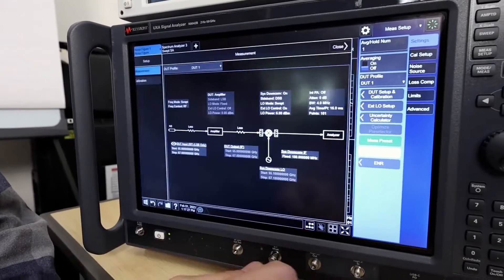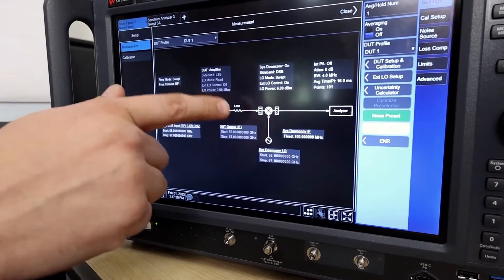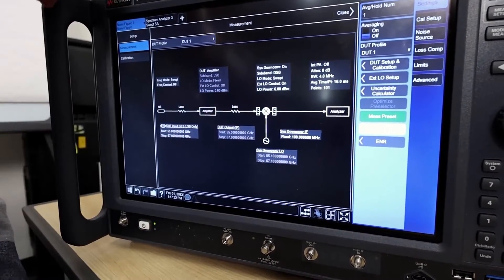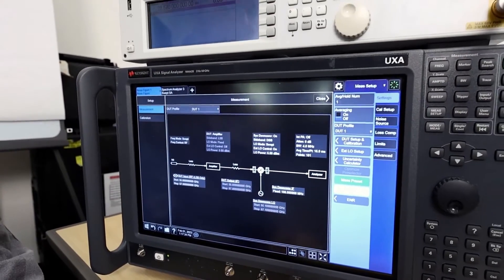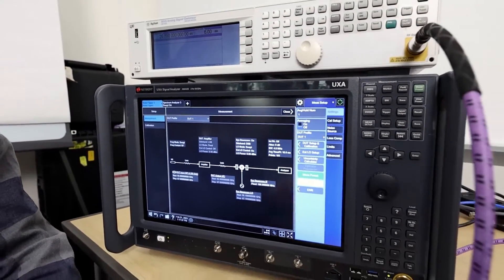This measurement did take a little bit more setup. I had to set up our downconverter, set up our source. But the difference is with the VDI, you can go all the way up to 330 gigahertz.